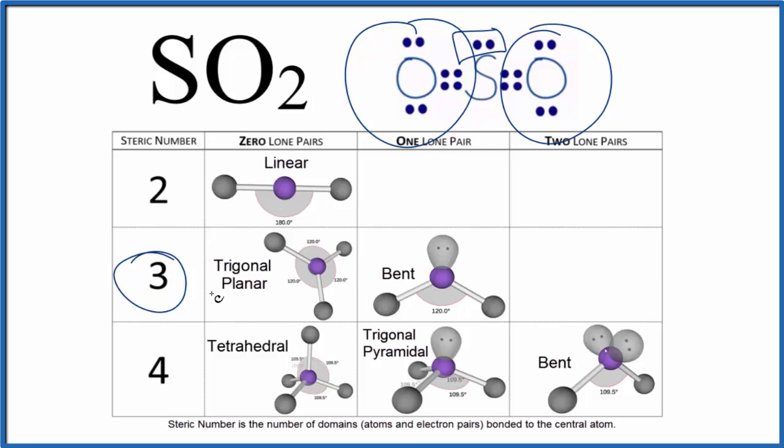And we said we have one lone pair. So we go over here and down. We have a bent molecular geometry for SO2.